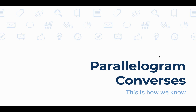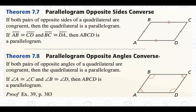Here are your first two converses — these look really familiar because they are just the exact opposite of the four theorems you just learned. If you're given a quadrilateral and you can show that both pairs of opposite sides are congruent, that's enough to conclude that the quadrilateral must be a parallelogram. Likewise, if you know that both pairs of opposite angles are congruent, you can conclude that this is a parallelogram.